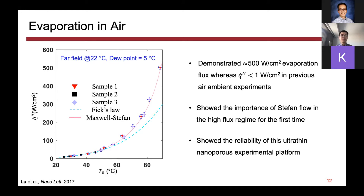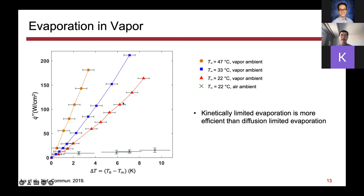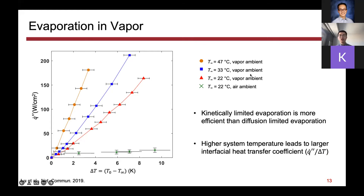We'll continue using that platform to study the more complicated evaporation-in-vapor problem. Here again the y-axis is interfacial heat flux and the x-axis is the temperature difference between the membrane or the interface and the far-field vapor. These green crosses represent the air-ambient data. If you compare them to the red triangles, you will see that kinetic-limited evaporation is much more efficient than diffusion-limited evaporation at the same ambient vapor or gas temperature. So at the same ΔT, the red triangles give you much higher q'', or interfacial heat flux. We call this ratio between the q'' and ΔT the interfacial heat transfer coefficient, and this coefficient continues going up as we increase the vapor ambient temperature.